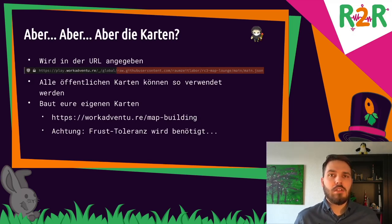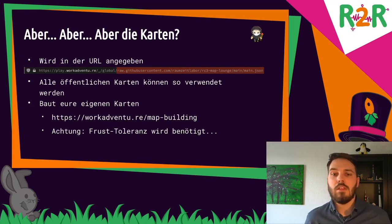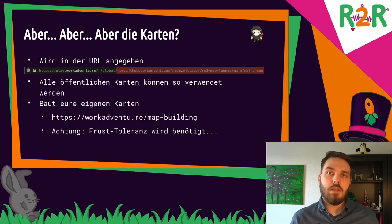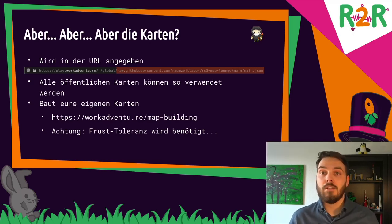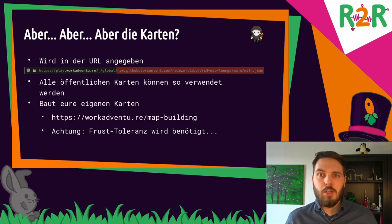What about maps? You can set any map and visit any map you can find openly and publicly. You can set it up using the URL — in this marked area it's the URL to the map. For example, we from the Raumzeit Labor set this one for the launch event of RC3. Anyone who goes to your host ends up on the same map, where you can talk to each other and interact. Of course, you can also make your own maps — there's information on the WorkAdventure site and other sources — but be aware there are still a lot of bugs and position information isn't always interpreted properly.